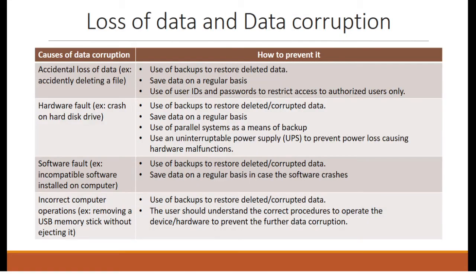Moving on to the causes of data corruption and how you can prevent them. Accidental loss of data, such as accidentally deleting a file. To prevent it: use of backups to restore deleted data, save data on a regular basis, use of parallel systems as a means of backup, and use an uninterruptible power supply or UPS to prevent power loss causing hardware malfunctions. Software fault, for example incompatible software installed on a computer. Use of backups to restore deleted or corrupted data, and save data on a regular basis in case the software crashes.